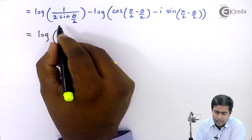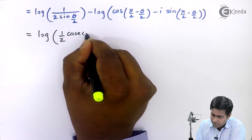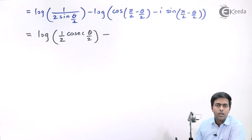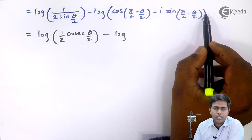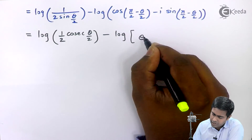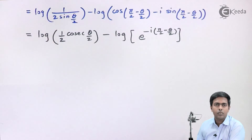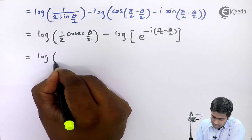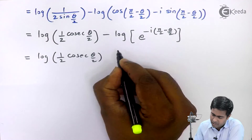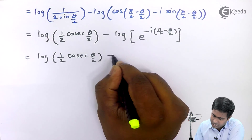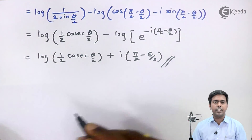The first term gives log of (1/2)·cosec(θ/2). The second term, cos(π/2 minus θ/2) minus i·sin(π/2 minus θ/2), is written in exponential form as e raised to minus i(π/2 minus θ/2). Taking the log, log and e cancel, and we get plus i(π/2 minus θ/2). Combining both terms gives log of (1/2)·cosec(θ/2) plus i(π/2 minus θ/2), which is the required result.